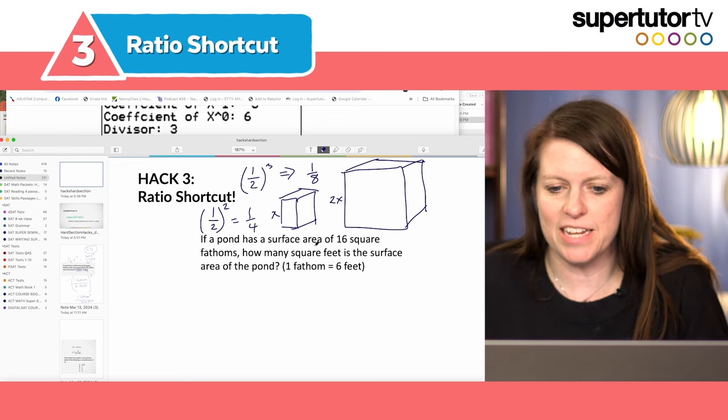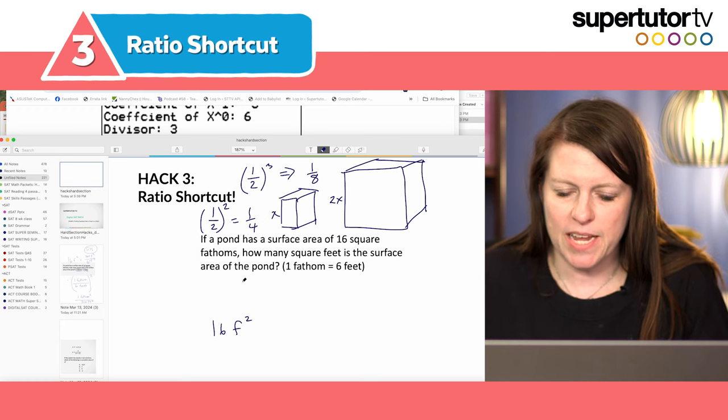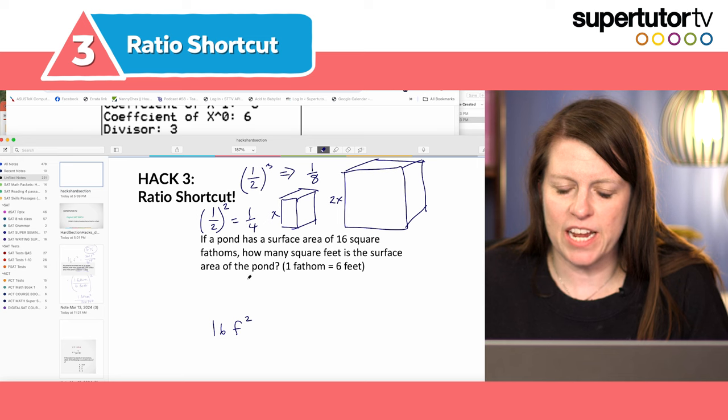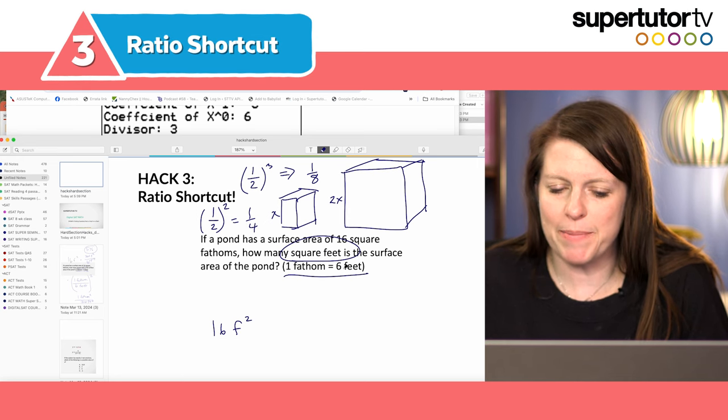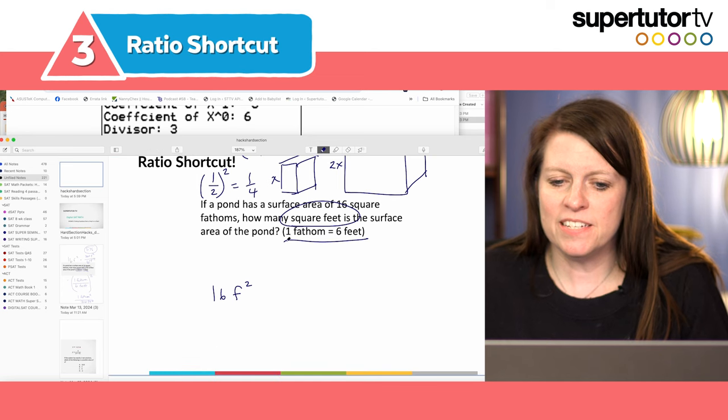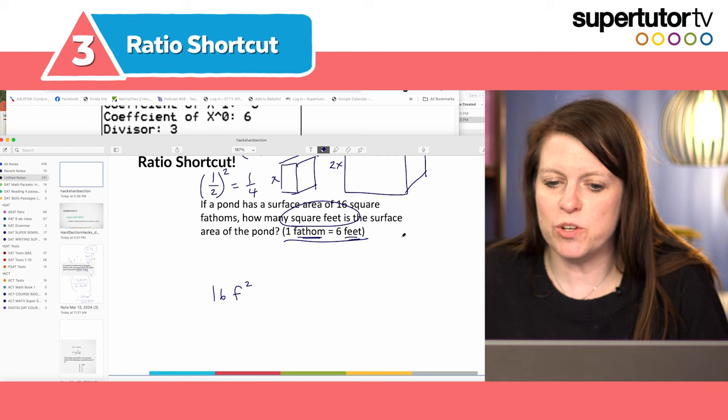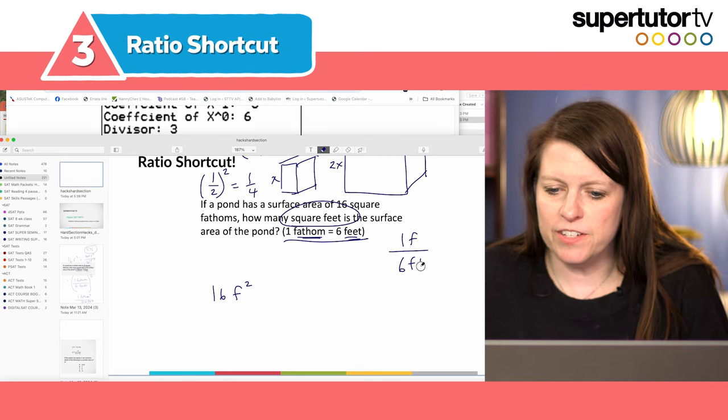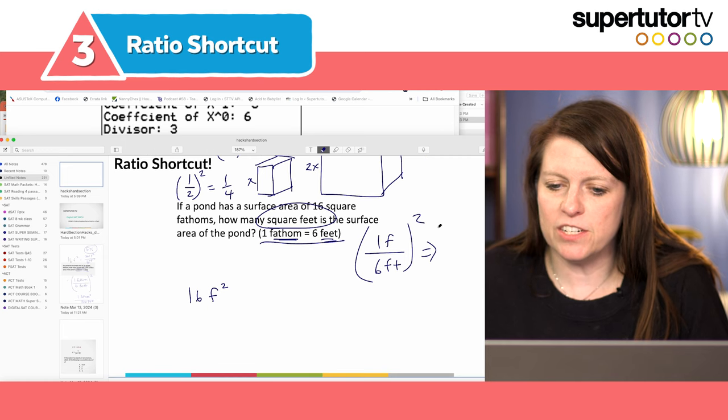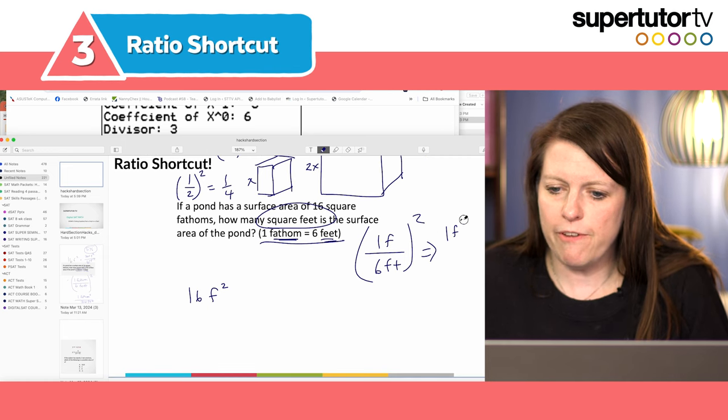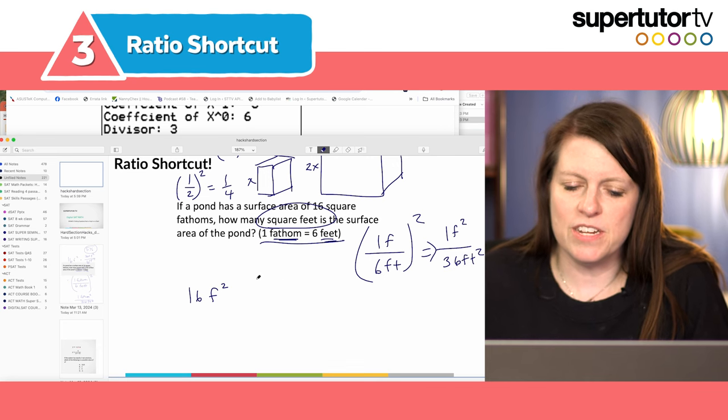So here we have a problem. If a pond has a surface area of 16 square fathoms so that's 16 square fathoms how many square feet is the surface area of the pond? So I need this in square feet. I need to convert but I can't just convert by multiplying by six right because this is one fathom in a single dimension to six feet not fathom squared to feet squared. So what I have to do is take this one fathom to six feet and I'm going to square the whole thing to get square feet to square fathoms. So this is fathom squared over 36 feet squared. So it's actually 36.